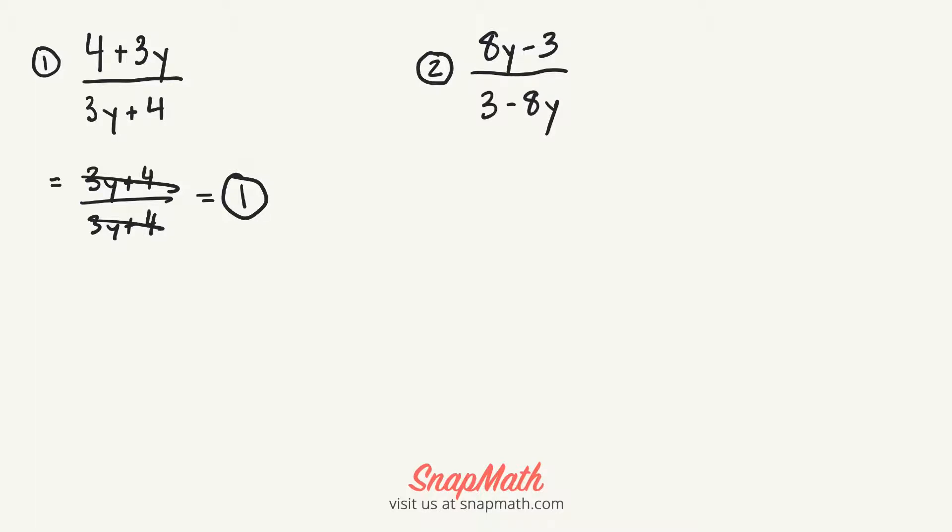This one's a little different. As you can see on the top, you have 8y minus 3 and then 3 minus 8y.